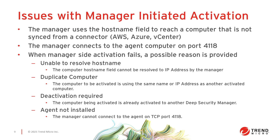When activating an agent from the manager side, the manager will use the hostname field to reach a computer that isn't synced from a connector like AWS, Azure, or vCenter, and attempts to contact the agent on port 4118. If manager-initiated activation fails, a reason is provided in the console. 'Unable to resolve hostname' means the manager is unable to translate the hostname to an IP address. 'Duplicate computer' means another computer with the same name or IP address has already been activated. 'Deactivation required' is reported if the computer is already activated to another Deep Security Manager. 'Agent not installed' is reported when activation is attempted on a computer object without an agent installed.